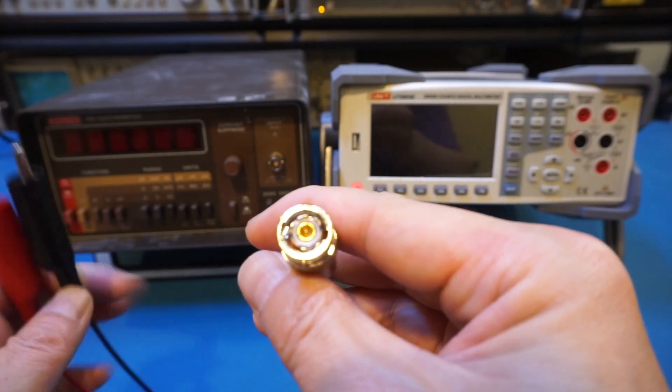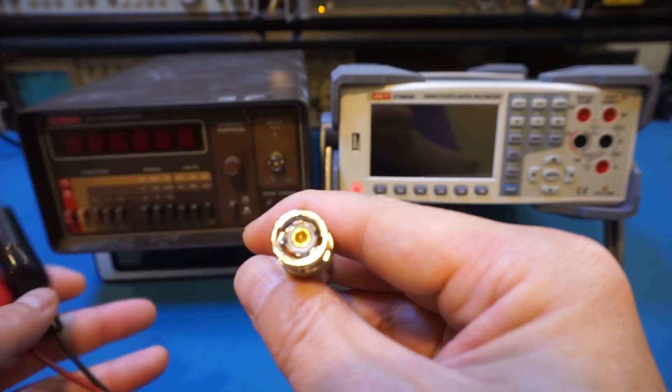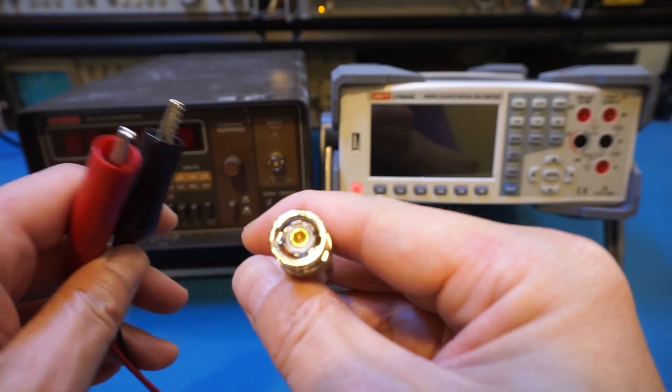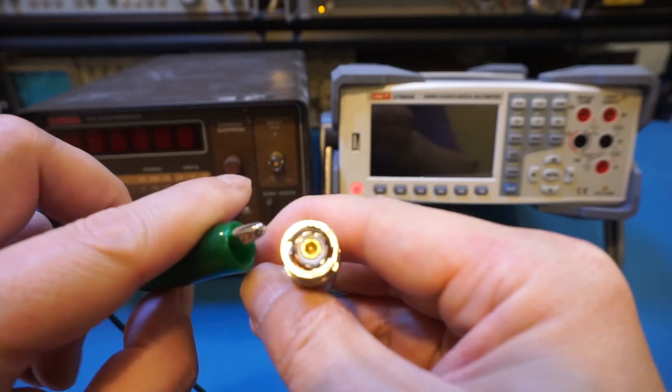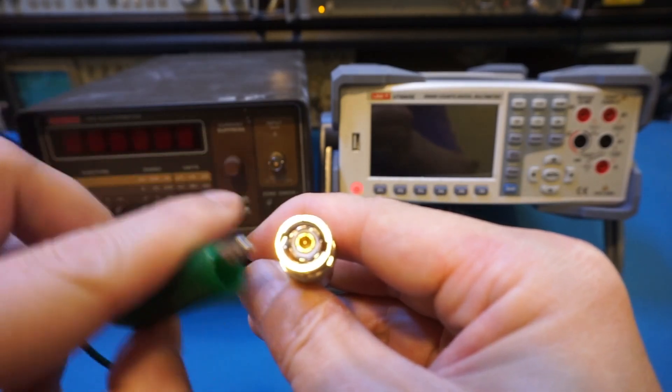Besides your typical black and white leads you find in a BNC to banana plug cable, you also get this green connector, and that is connected to the inner shielding, which is the guard terminal.